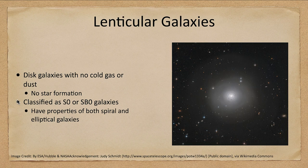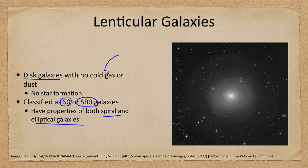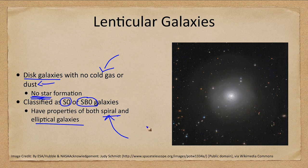Lenticular galaxies are an interesting combination of both spiral and elliptical galaxies. They are classified as S0 or SB0 — yes, they can have a bar. The S refers not to spiral but to the fact that they are disk galaxies. They are disk galaxies with no cold gas and no dust, meaning no star formation. So in terms of stellar populations they resemble ellipticals, but their shape is closer to that of a spiral galaxy.